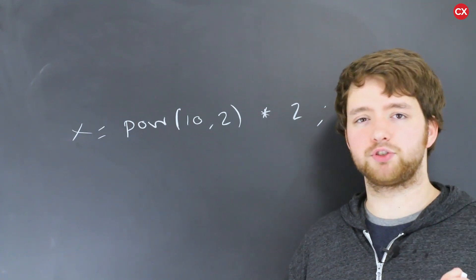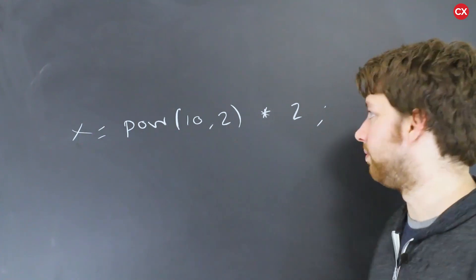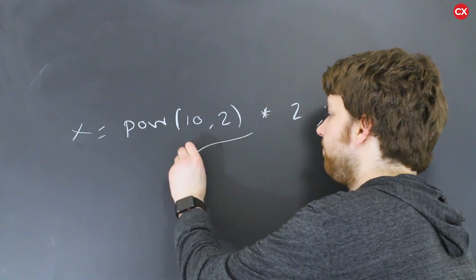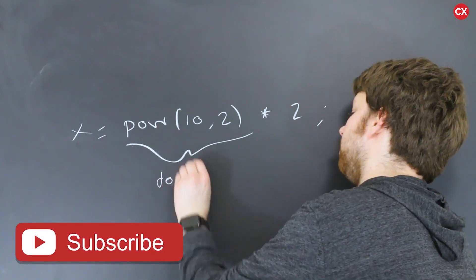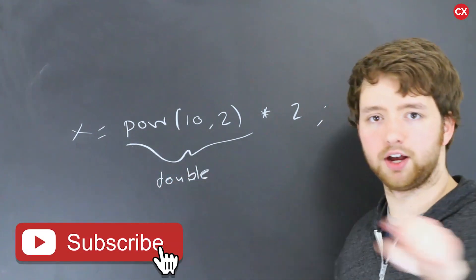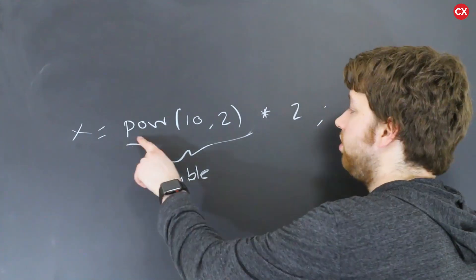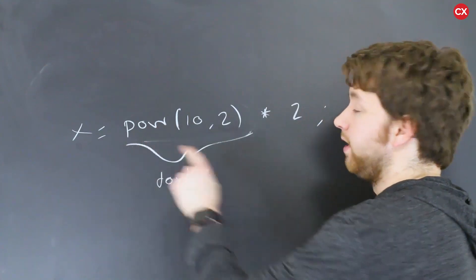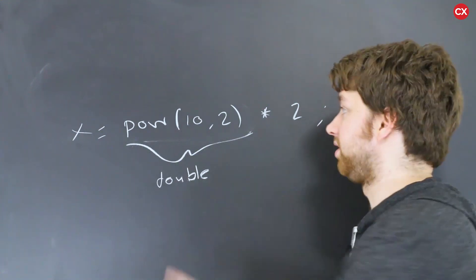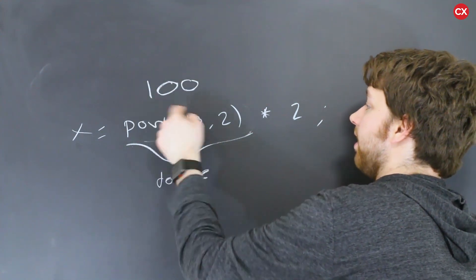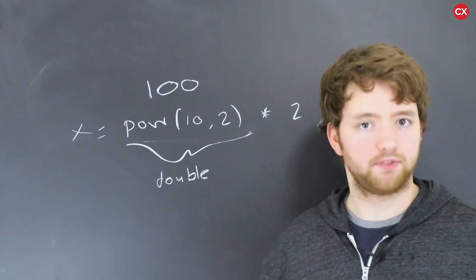Whatever you decide to do with that value is totally up to you. Be creative, don't feel restricted, because if you think about it, this power function here, I think it returns a double, which is basically just a number with decimal values after. Anywhere you would expect to use a double, you can use this function call here. It's going to happen first, it's going to be replaced with the value 100, and then that is a double, works fine.